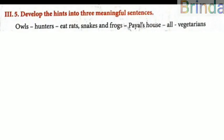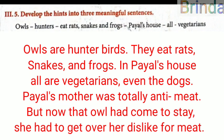Third question, Roman number five: Develop the hints into three meaningful sentences. You are given words: owls, hunters, eat rats, snakes and frogs. In Pile's house, all are vegetarians. You can write on your own. Sample answer: Owls are hunter birds. They eat rats, snakes, and frogs. In Pile's house, all are vegetarians — even the dogs. Thus, Pile's mother was totally anti-meat, but now an owl had come to stay, so she had to get over her dislike for meat.